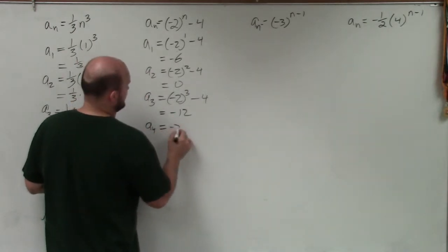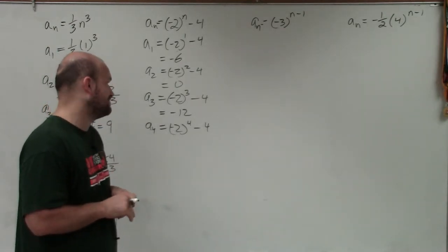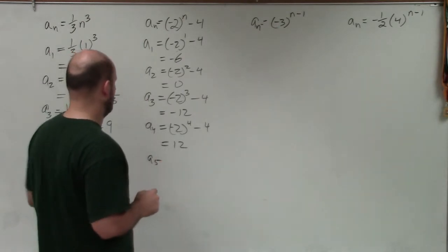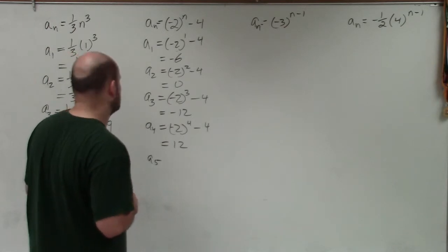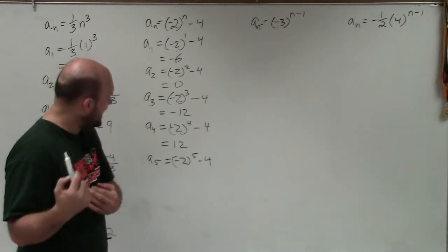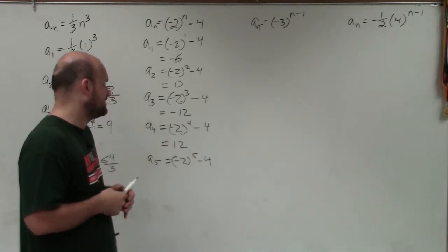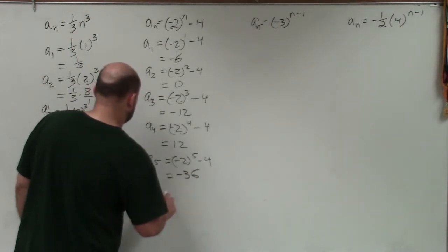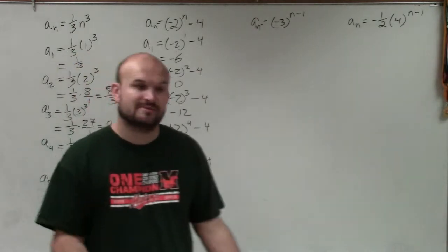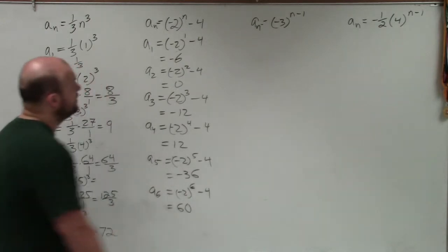A sub 4 is negative 2 raised to the fourth power minus 4. Any time you raise a negative number to an even power, it becomes positive. Negative 2 to the fourth power is positive 16. Positive 16 minus 4 is positive 12. A sub 5 is negative 2 raised to the fifth power minus 4. Since the exponent is odd, that gives us negative 32. Negative 32 minus 4 gives us negative 36. A sub 6 is negative 2 raised to the sixth power minus 4. 2 to the sixth power is 64, so negative 2 to the sixth is positive 64. Positive 64 minus 4 gives us 60.